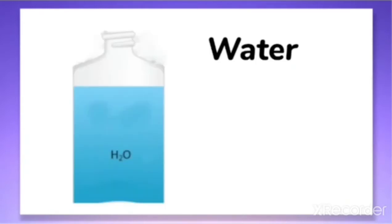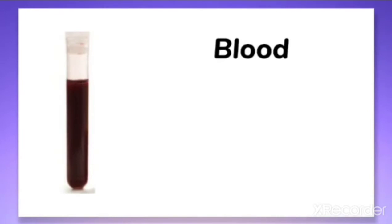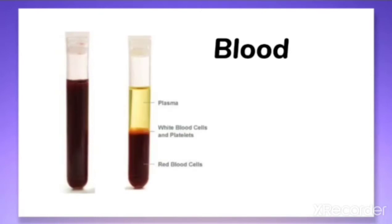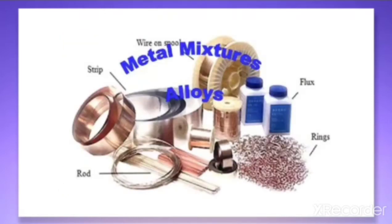The water we drink contains a very small amount of various salts. Various substances like milk, jaggery, sherbet, drinks etc. are also examples of mixtures. Our blood is a mixture of many components — plasma, white blood cells, platelets, and red blood cells. Alloys such as brass, bronze, and stainless steel which we use in daily life are also mixtures.